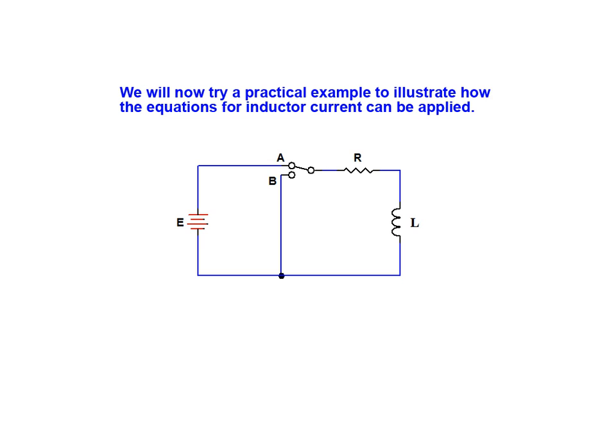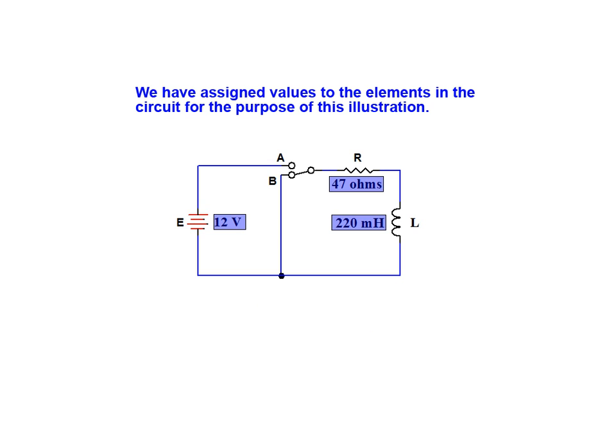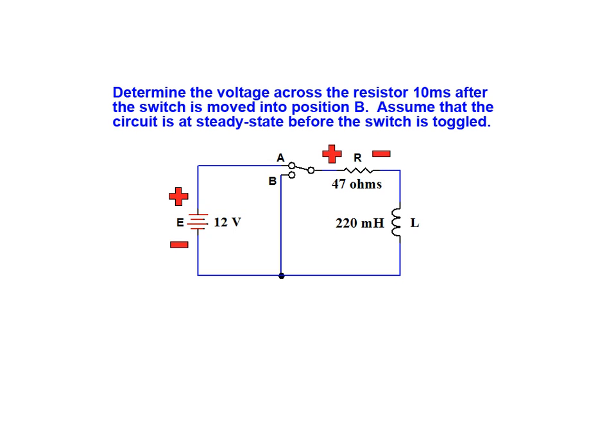We will now move on and try a practical example to illustrate how these charge and discharge equations for inductor current can be applied. We have assigned values to the elements in the circuit for the purpose of this illustration. We're asked to determine the voltage across the resistor 10 milliseconds after the switch is moved into position B. We are assuming that the circuit is currently at steady state before the switch has been toggled.